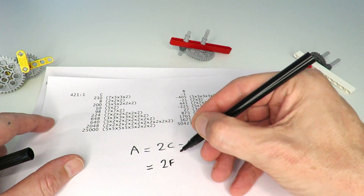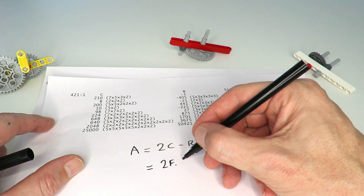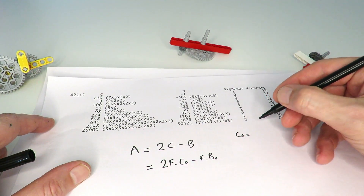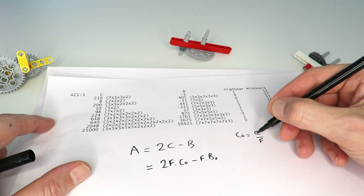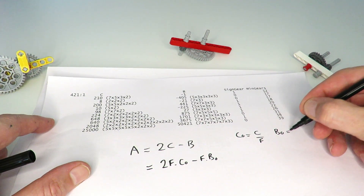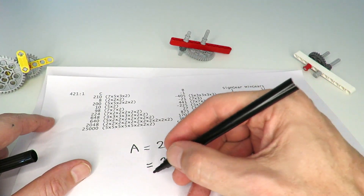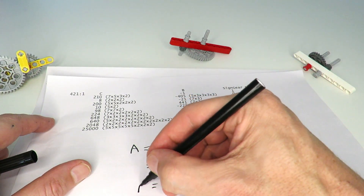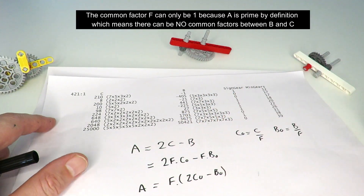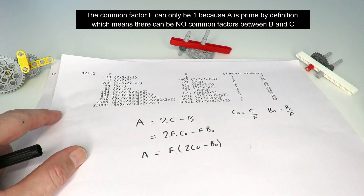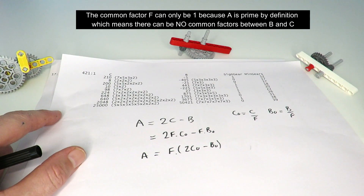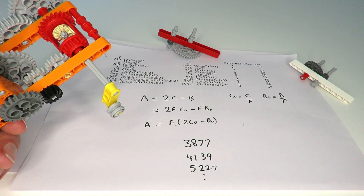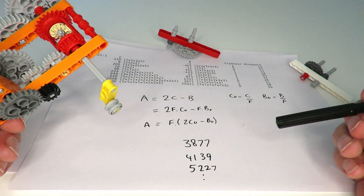Looking at A equals 2C minus B: if B and C share a common factor f, we can write this as f times (2C₀ minus B₀) equals A, where C₀ equals C over f and B₀ equals B over f. This means A is expressed as a product of two integers, which would imply A is not prime. Since A is prime, f cannot be anything other than one — so B and C can never share a common factor. I also discovered that not all primes can be created: the first prime with no solution was 3877, then 4139, 5227, and many more after that.